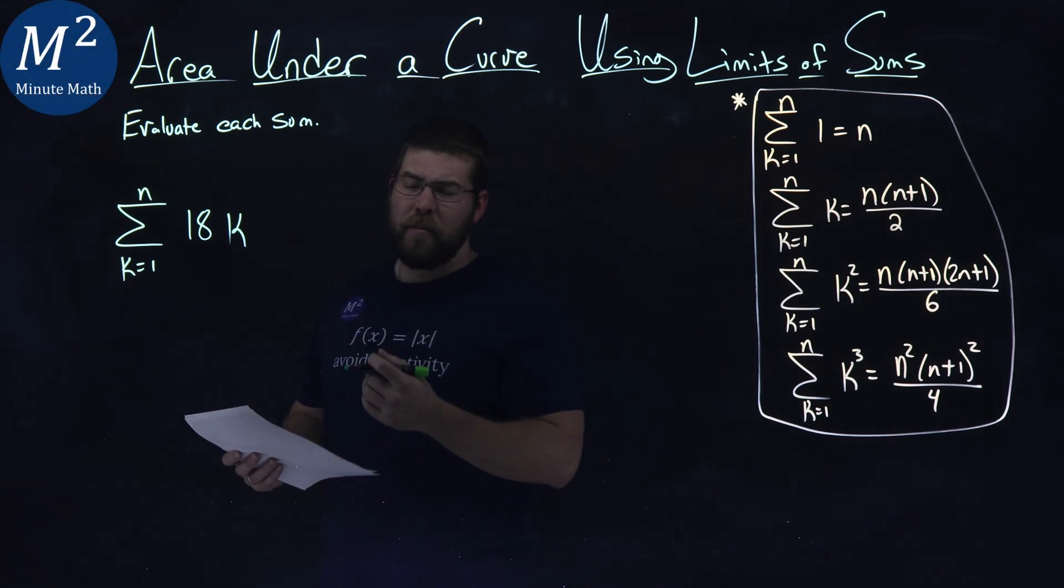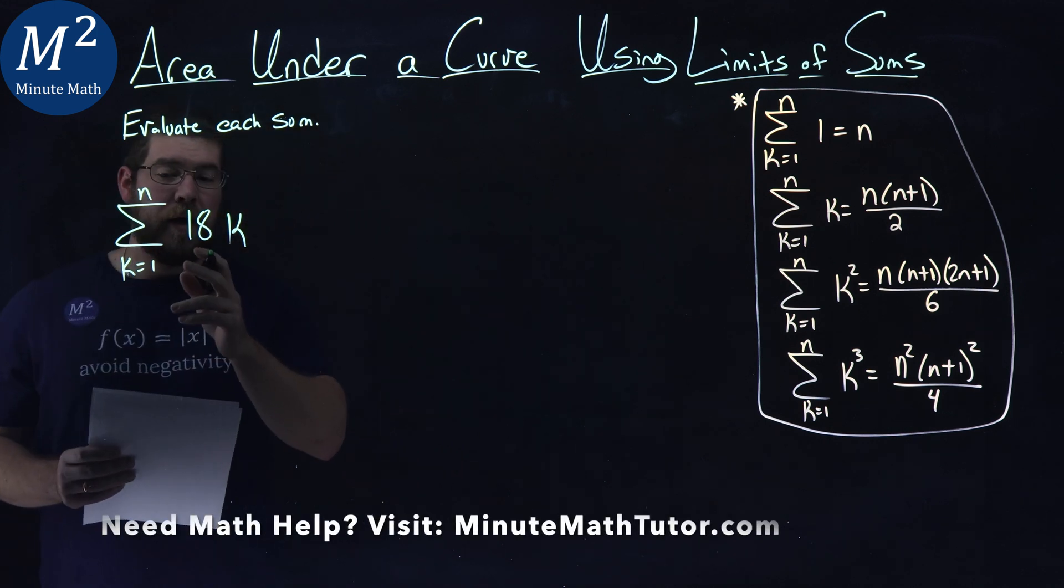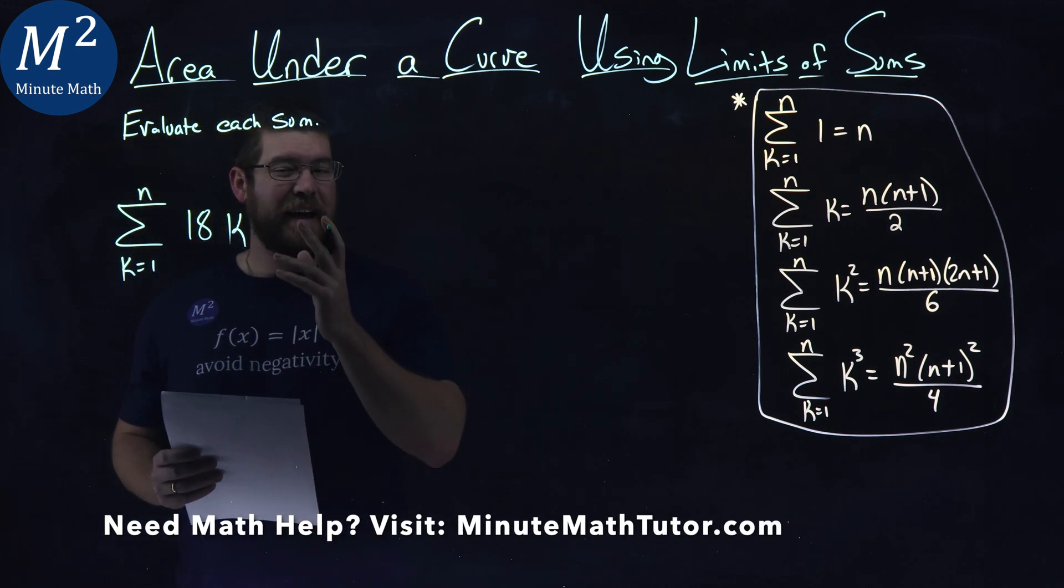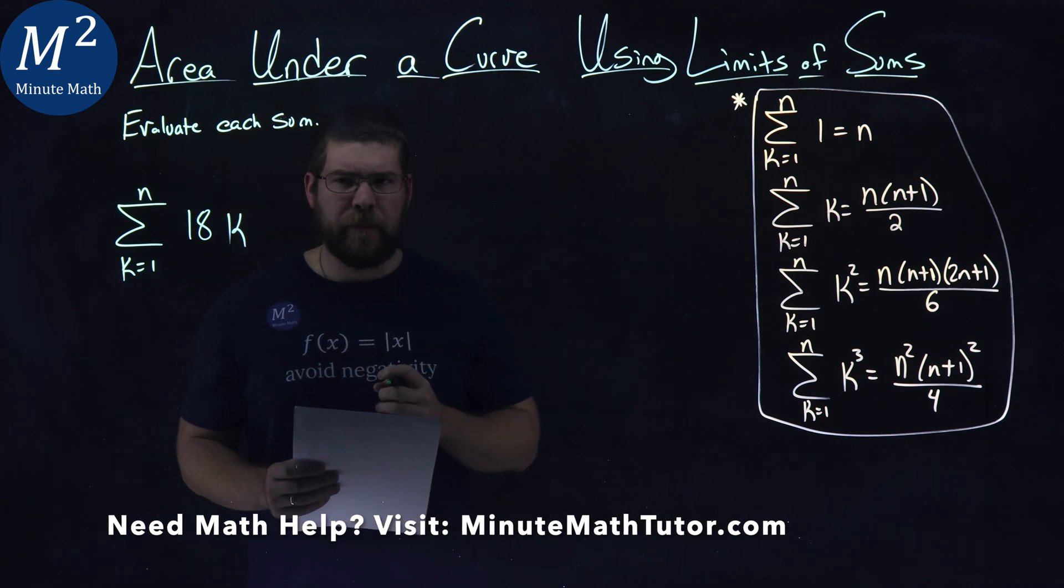We're given this problem right here. The sum from k equals 1 to n of 18k, and we have to evaluate the sum.